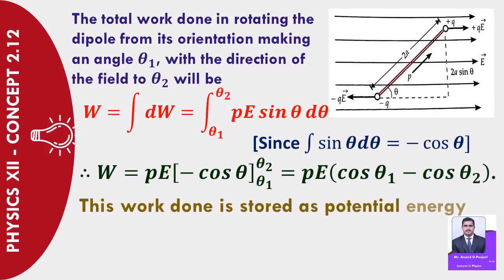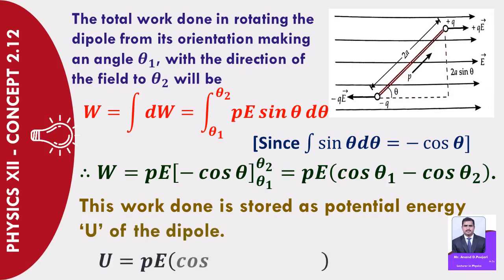This work done is stored as potential energy U of the dipole. That is, U = PE(cos θ₁ − cos θ₂).